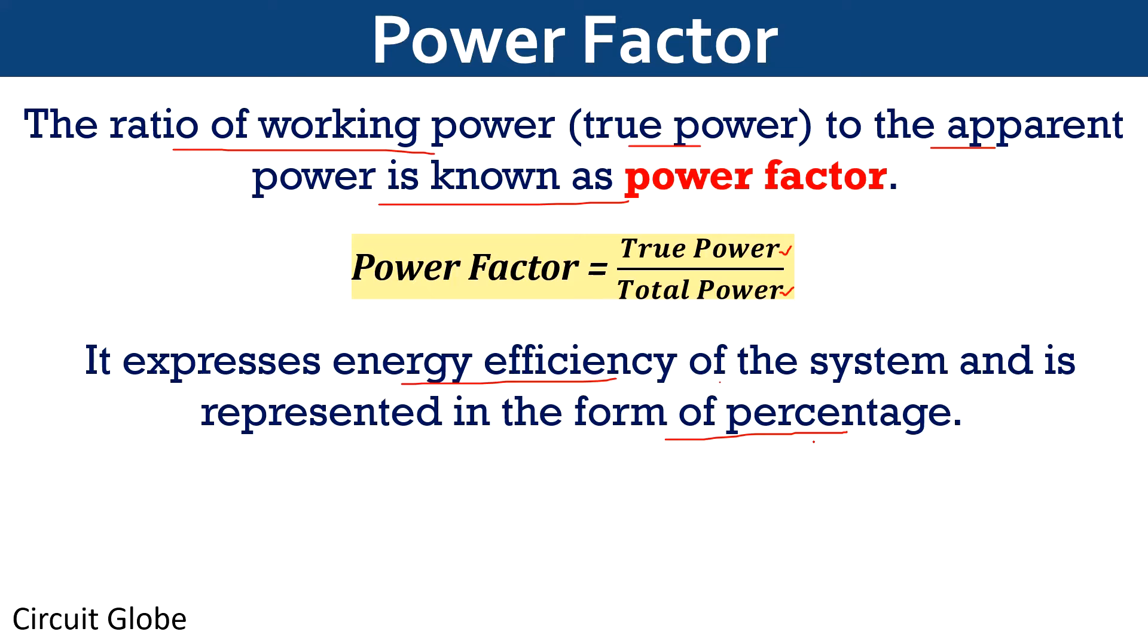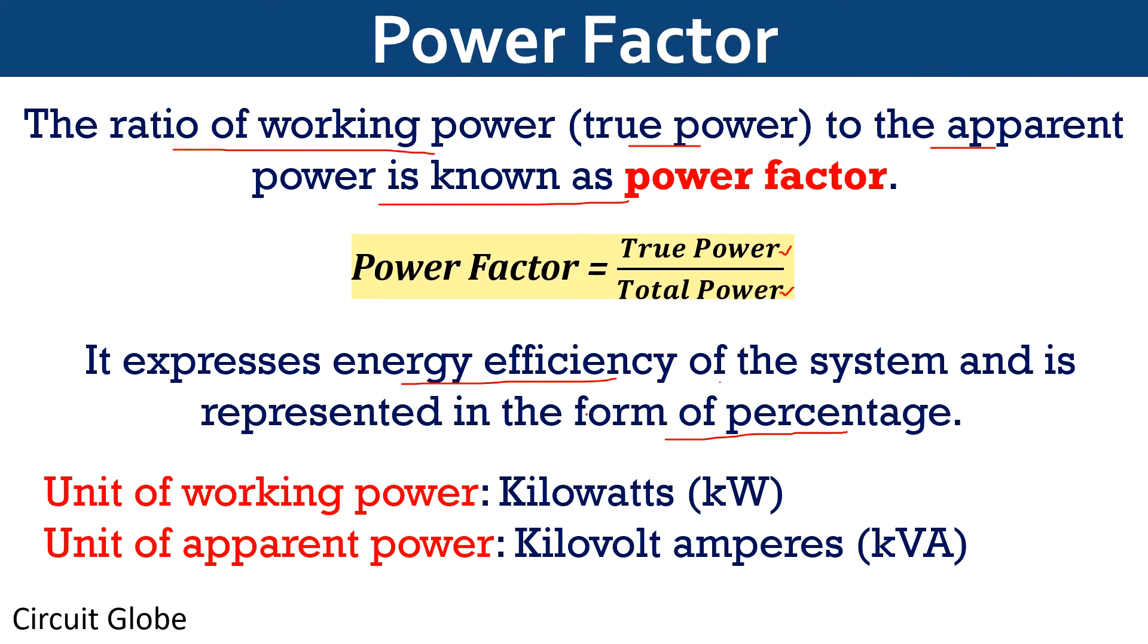It is said that power factor expresses the energy efficiency of the system and is generally represented in the form of percentage. So basically, lower the percentage, less efficient power usage of the system will be. The working or true power of the system is measured in kilowatts, while apparent or total power of the system is measured in kilovolt-amperes.